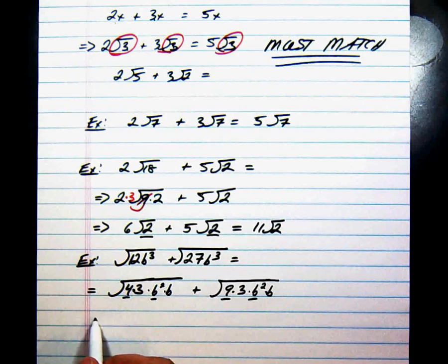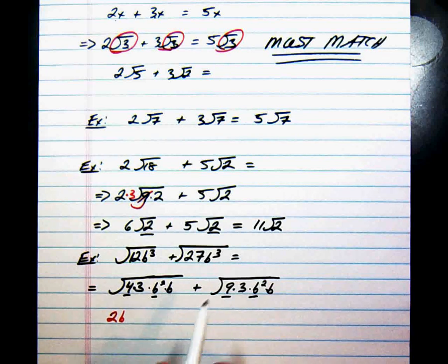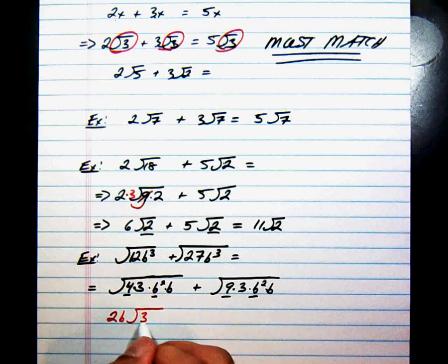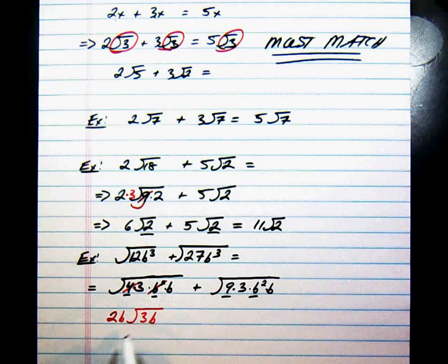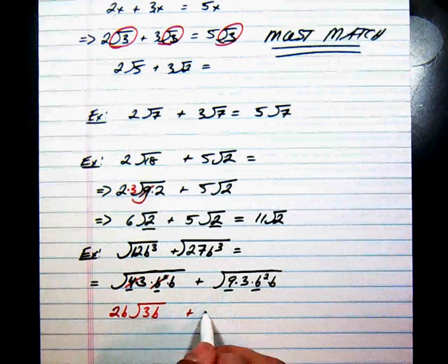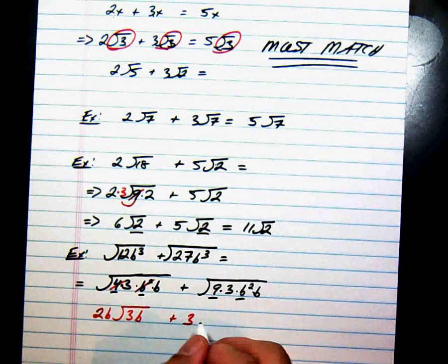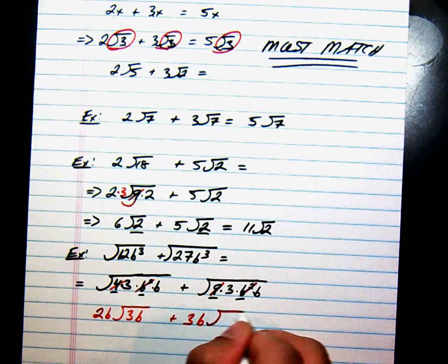Now let's go ahead and pull out these perfect square factors. The 4 comes out as a 2. The b squared comes out as a b. And what's left underneath is the 3 and the b. The 9 comes out as a 3. And the b squared comes out as a b. And all that's left under is 3b.